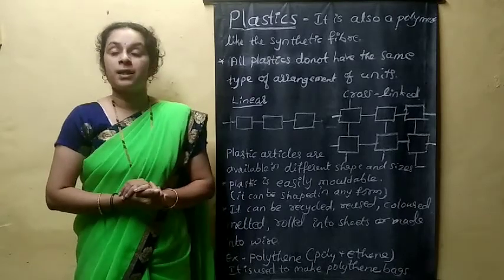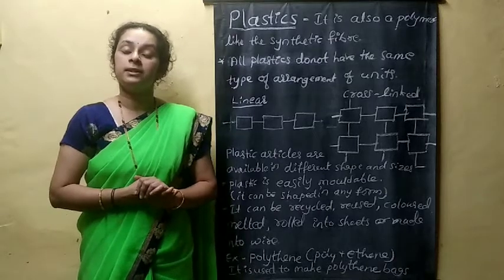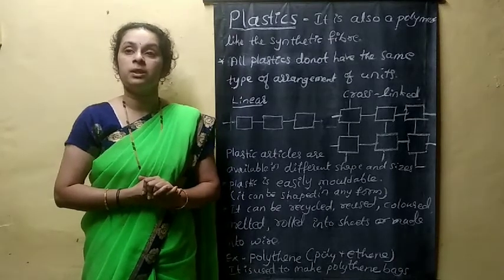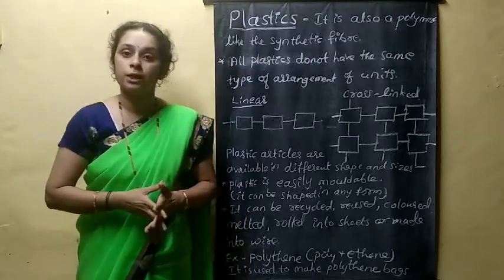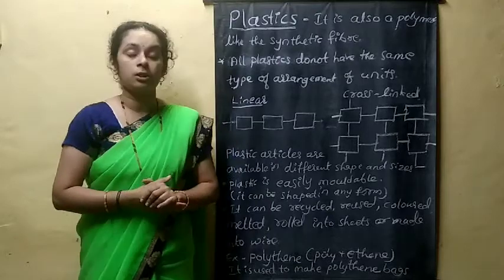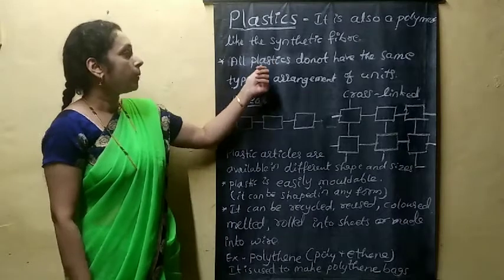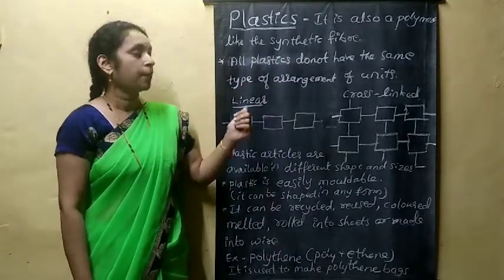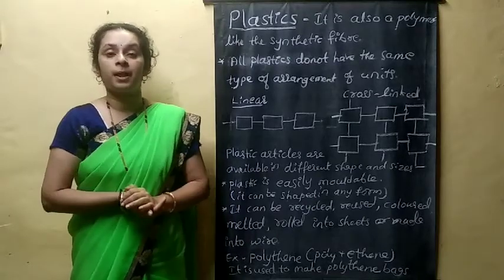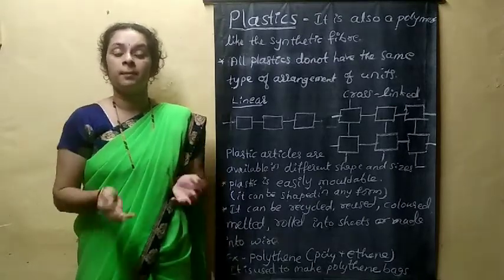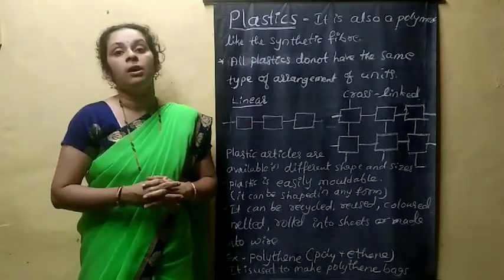What is plastic? Plastic is also a polymer, like synthetic fibers. They are made up of many small units combined to form a large unit. All plastics do not have the same type of arrangement of units. You will come across different types of plastics in different shapes and sizes because of this arrangement of units in the plastic.